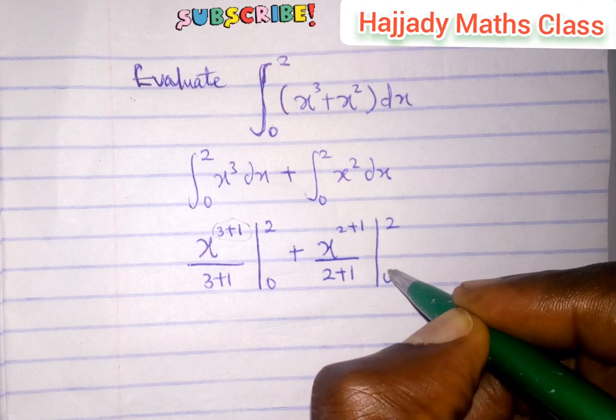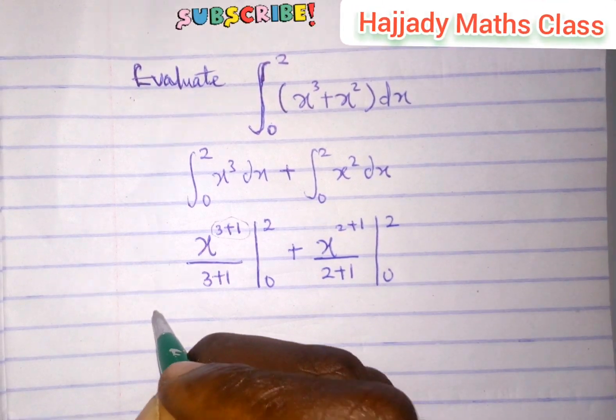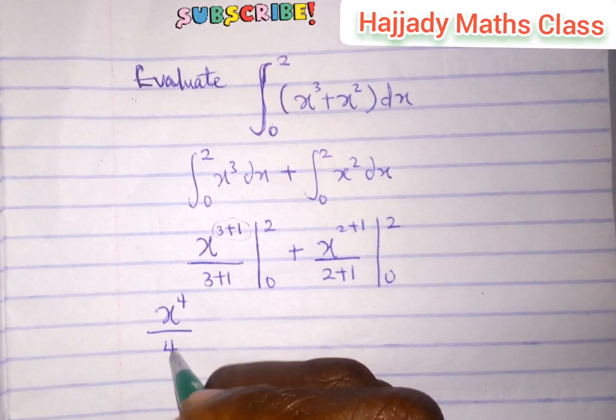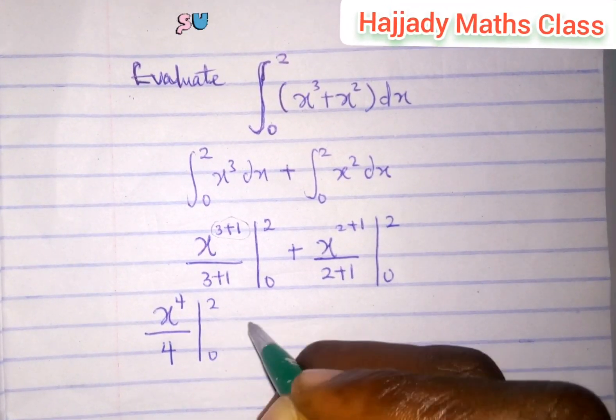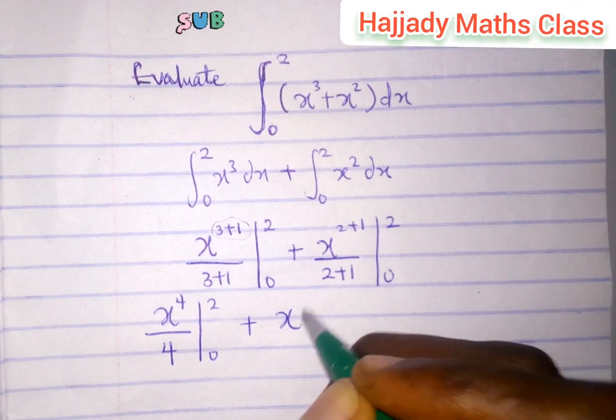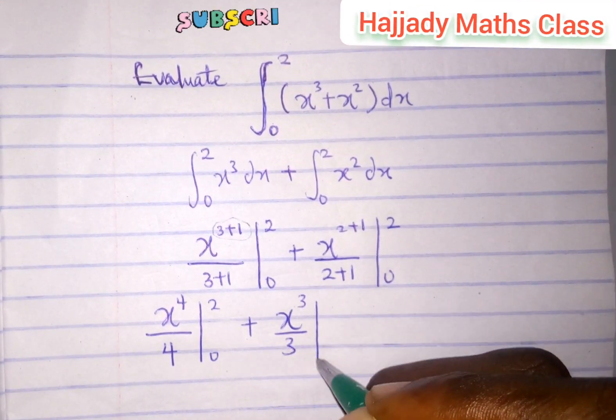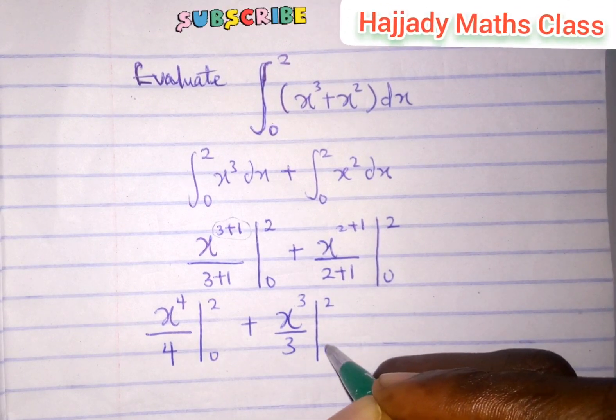Now, solving this, we have this to be x raised to the power 4, all over 4, from 0 to 2, plus x raised to the power 2 plus 1 is 3, all over 3, from 0 to 2.